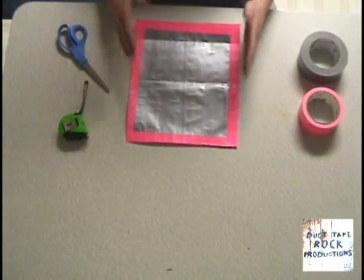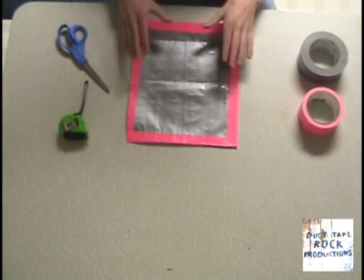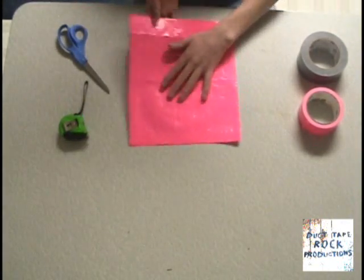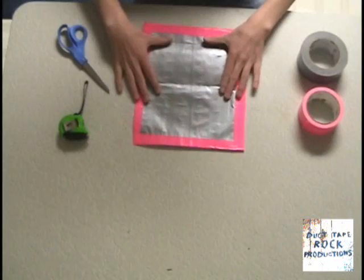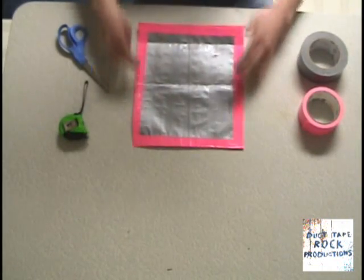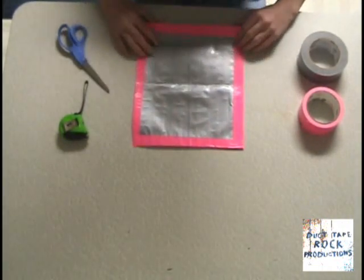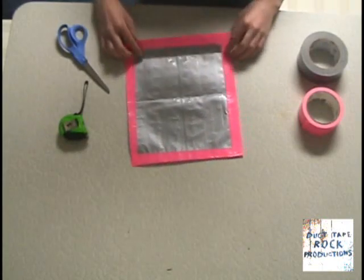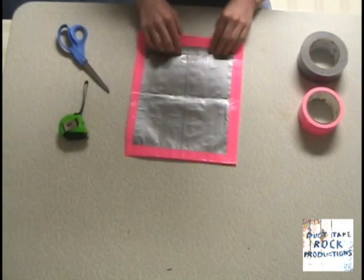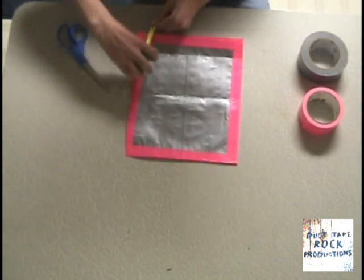Okay, once you have something that looks like this - a sheet of duct tape with pink on one side, traditional duct tape color on the other with pink trim - you are going to want to make a crease two inches in from the top.